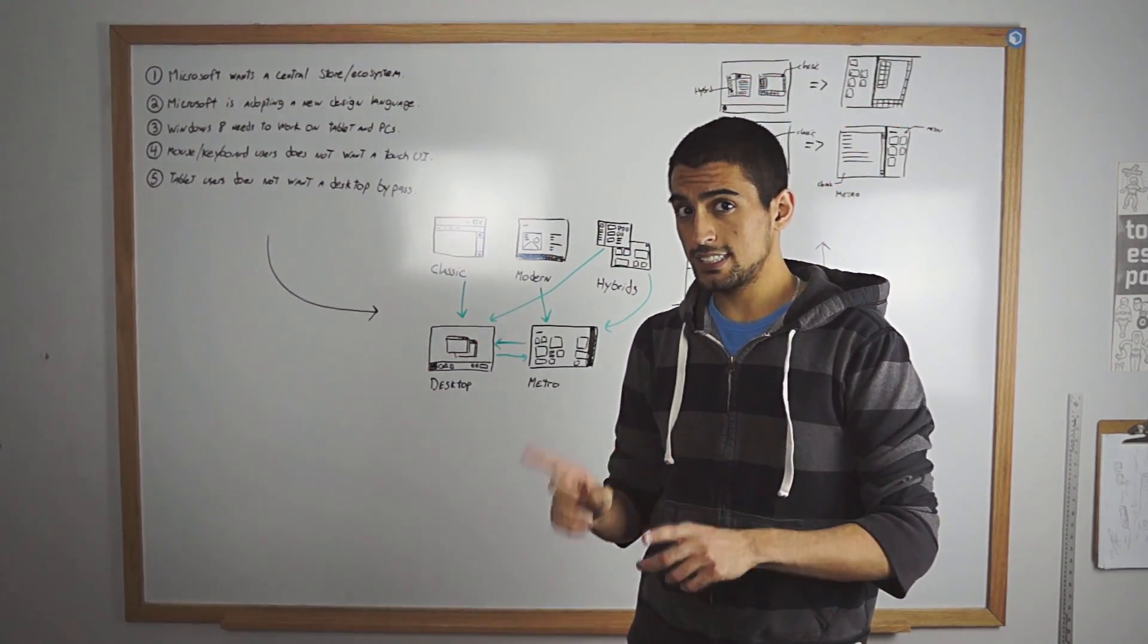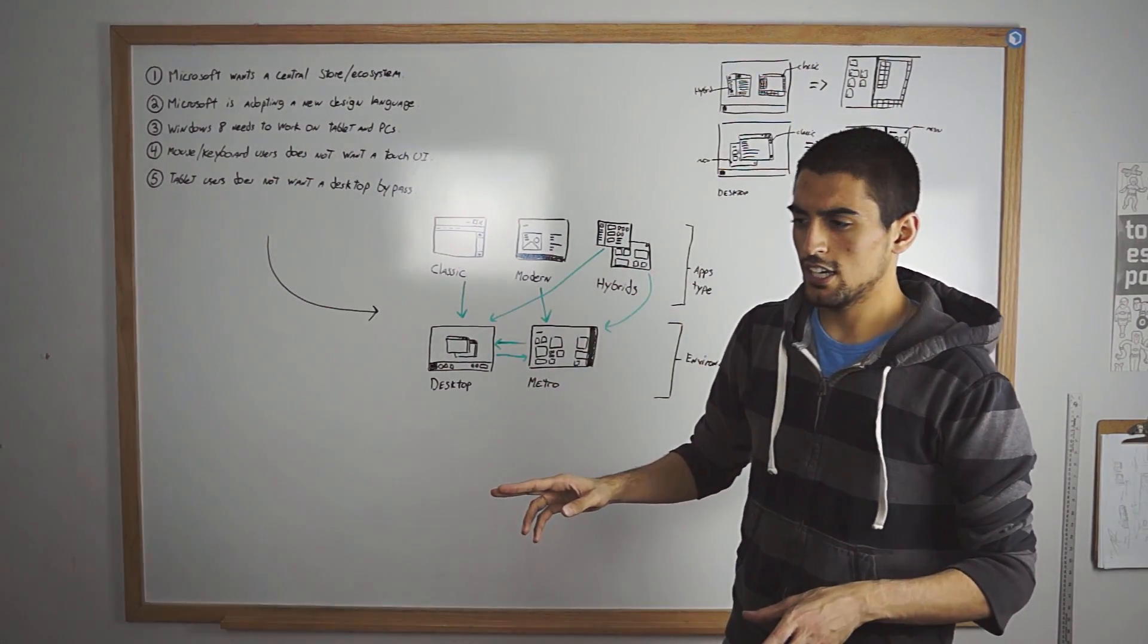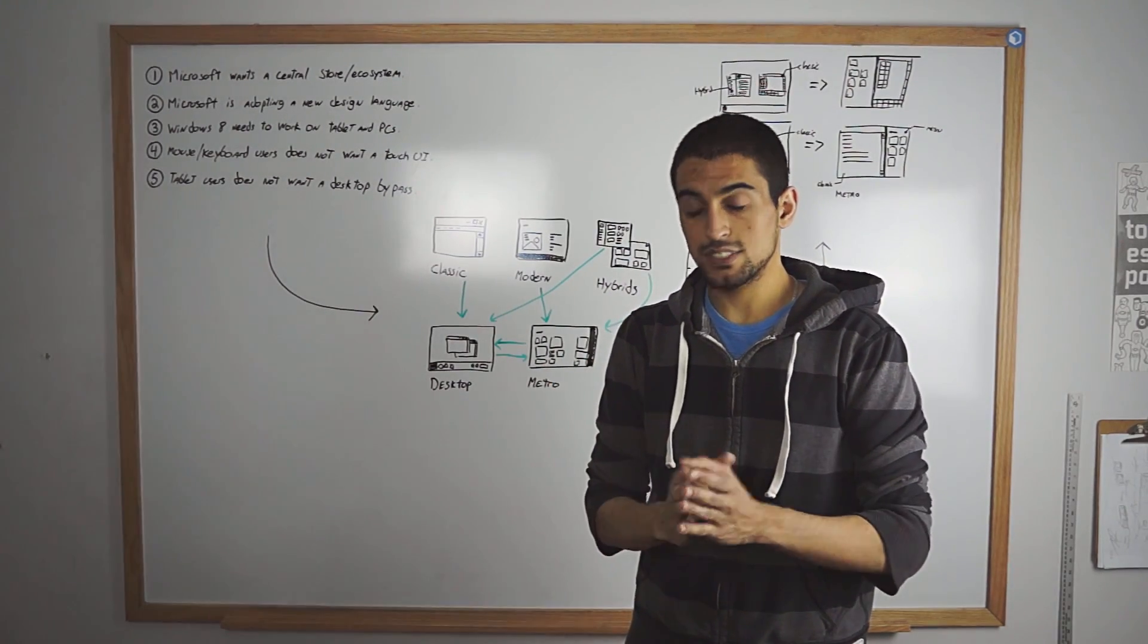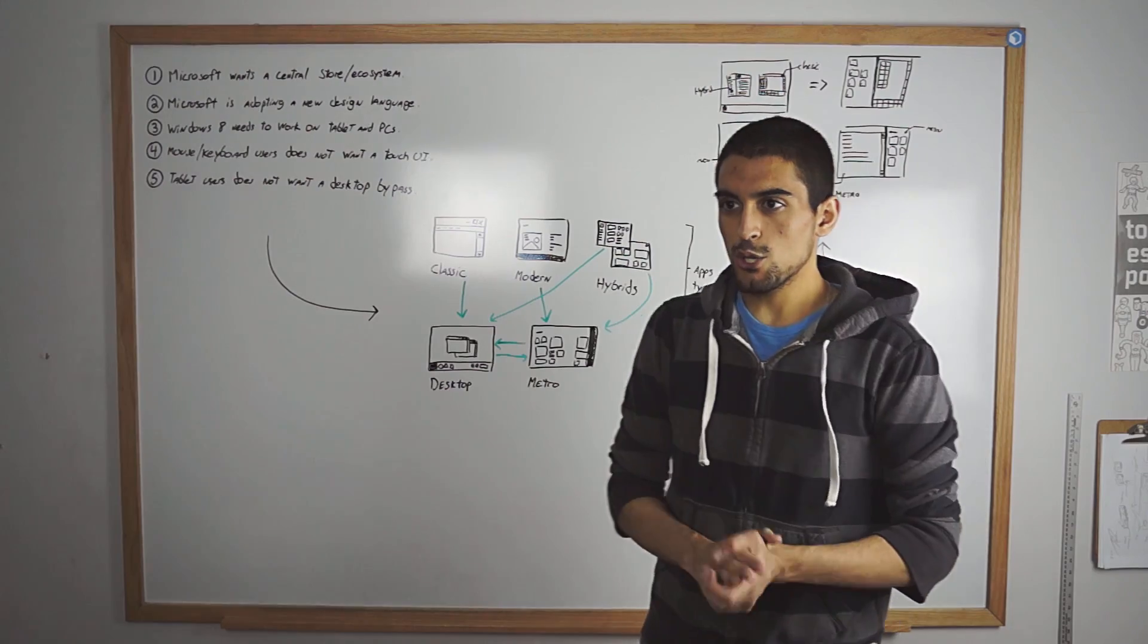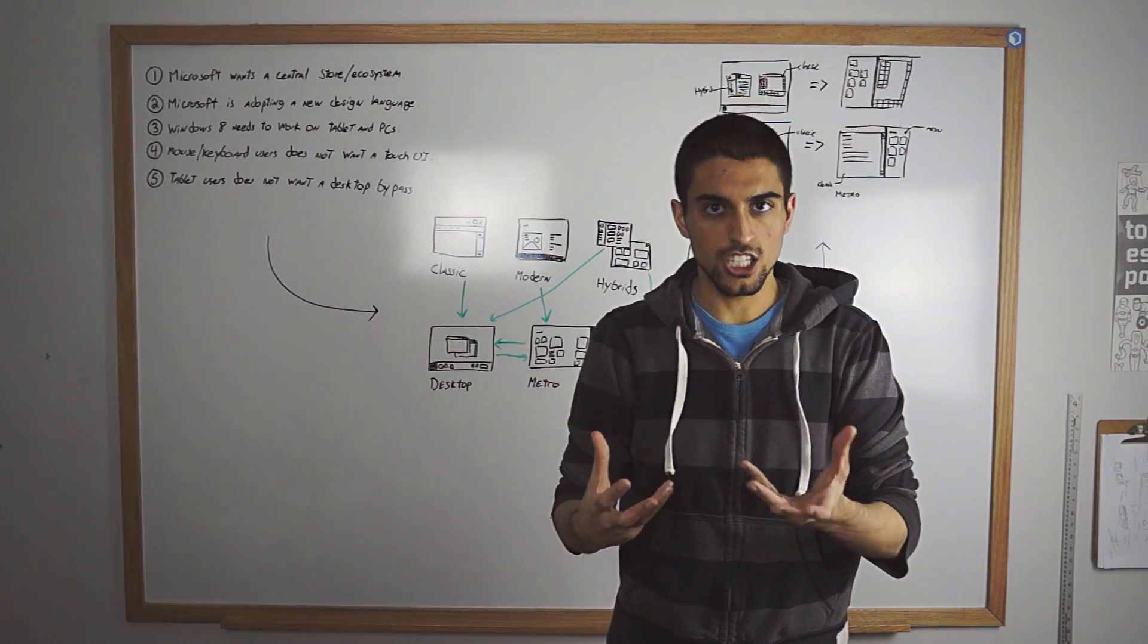But the desktop is considered kind of like a modern application. So when you use the Metro version of side by side multitasking, you have half of your screen, you know, more or less, you can always adjust that.